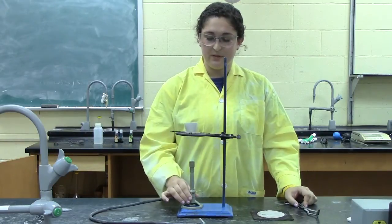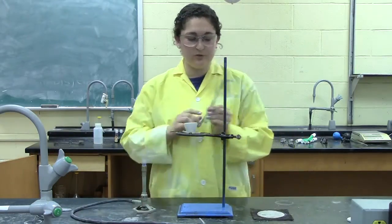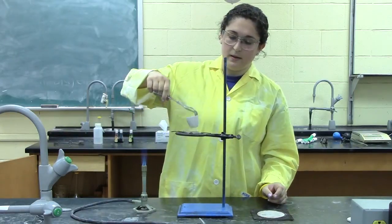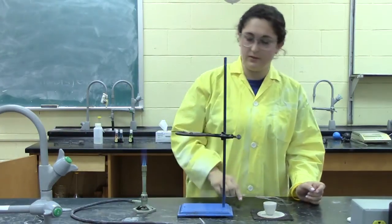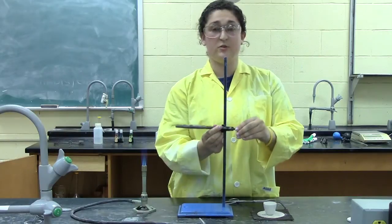Once you're done with that, you can remove your crucible with the tongs and then raise your ring so you don't burn your sample.